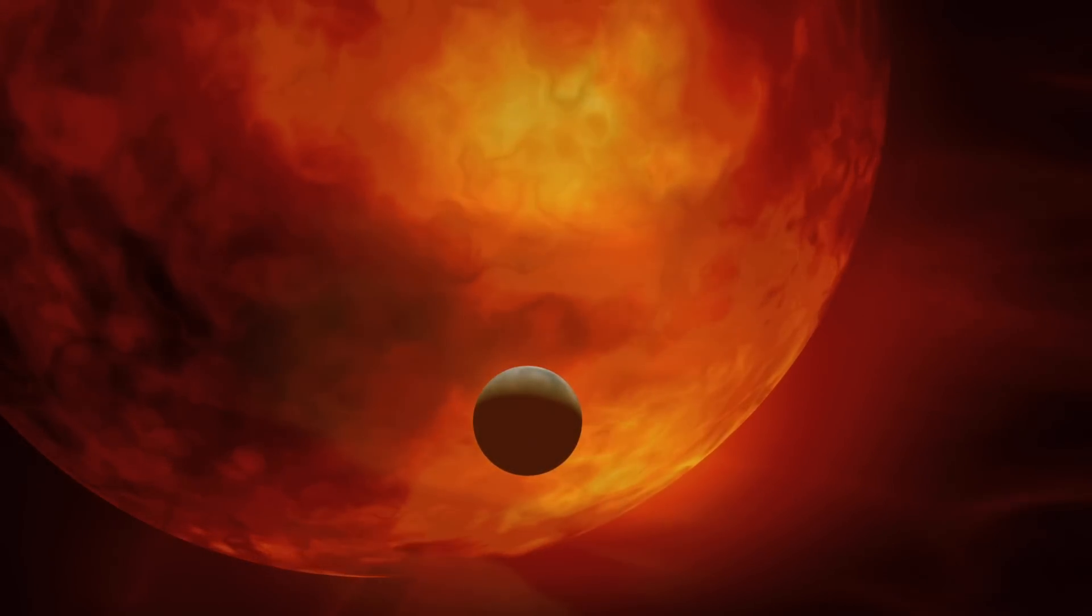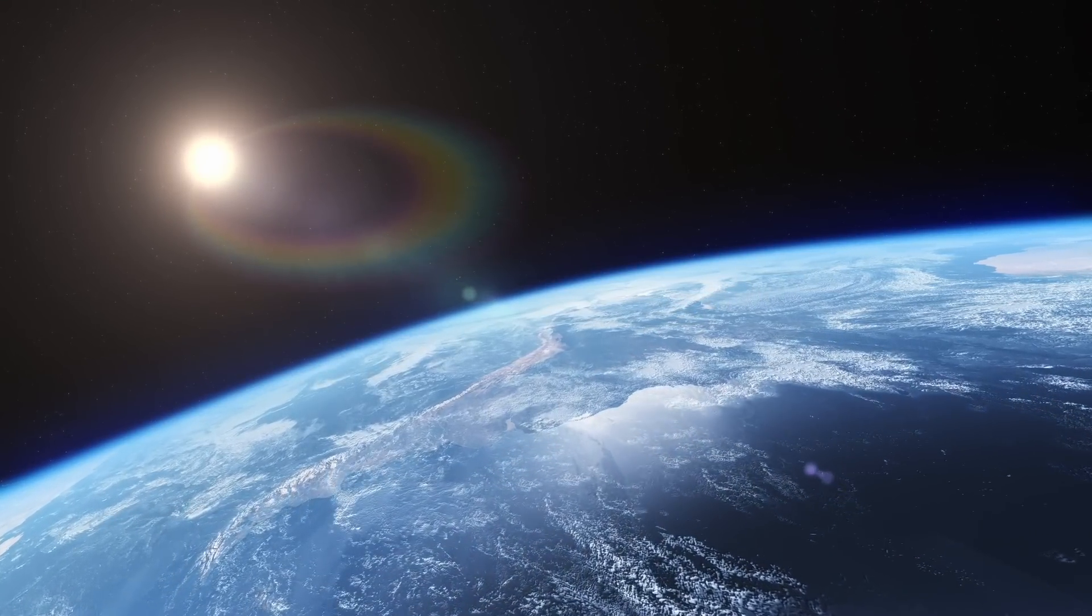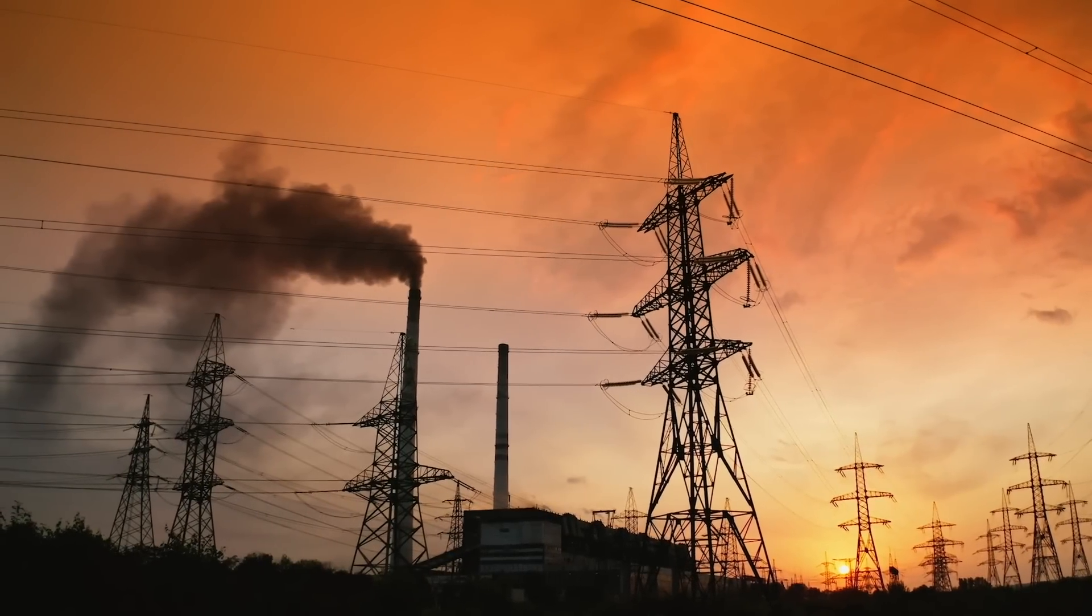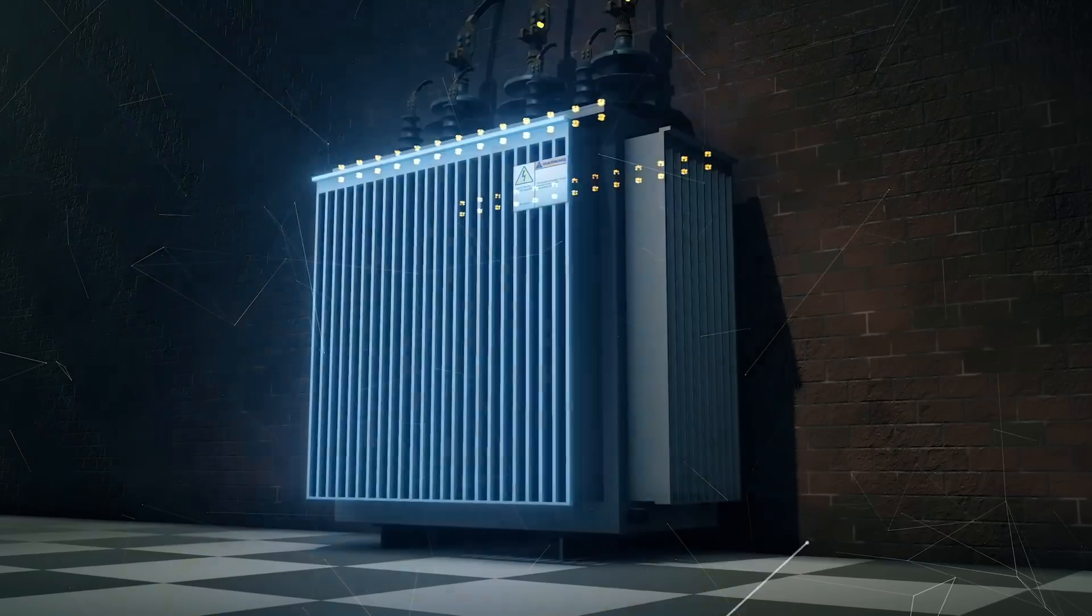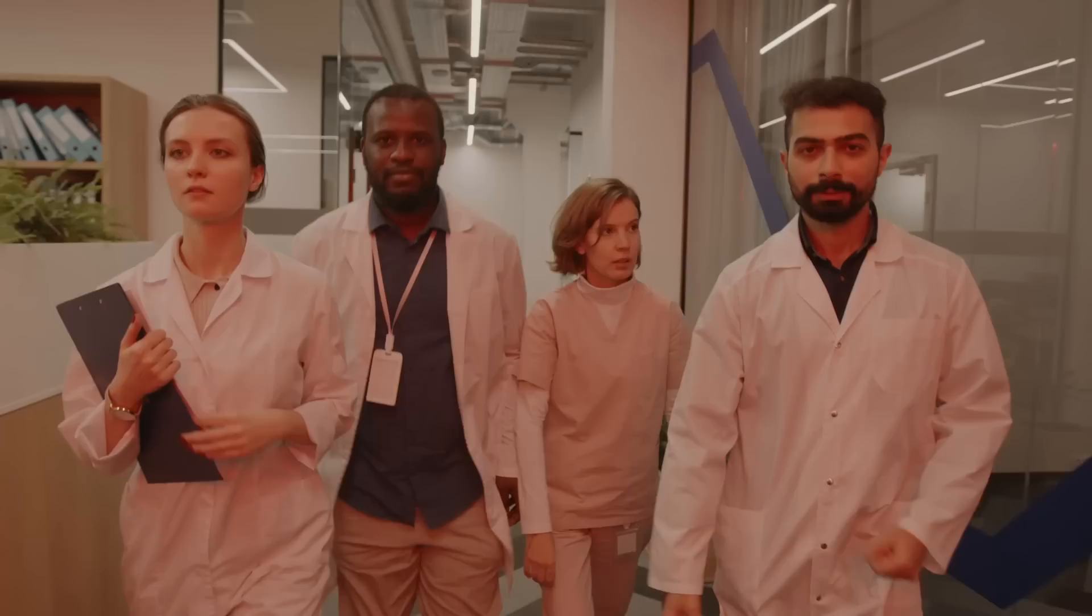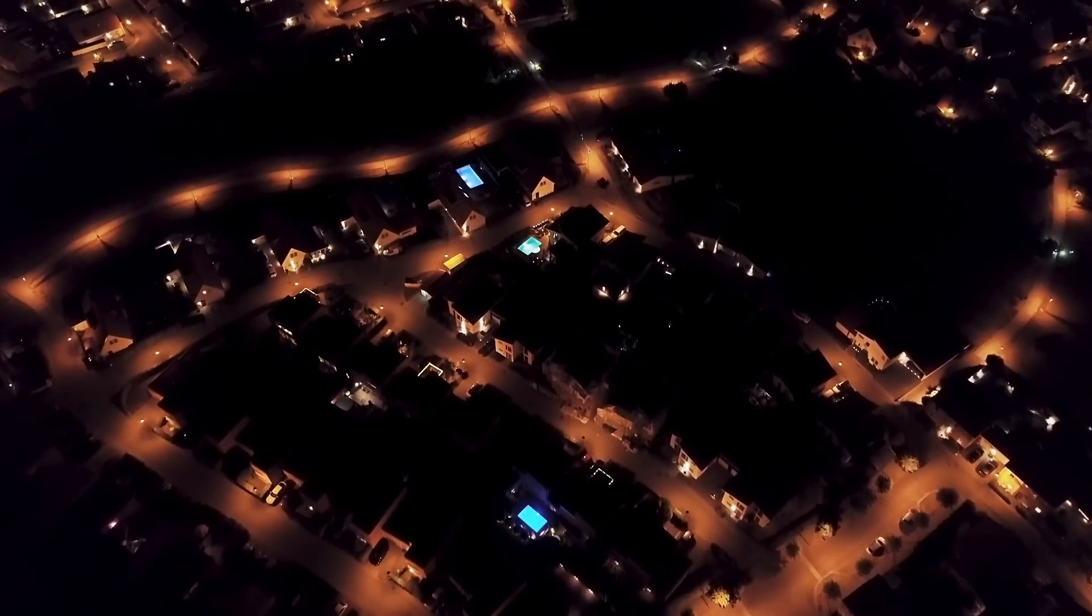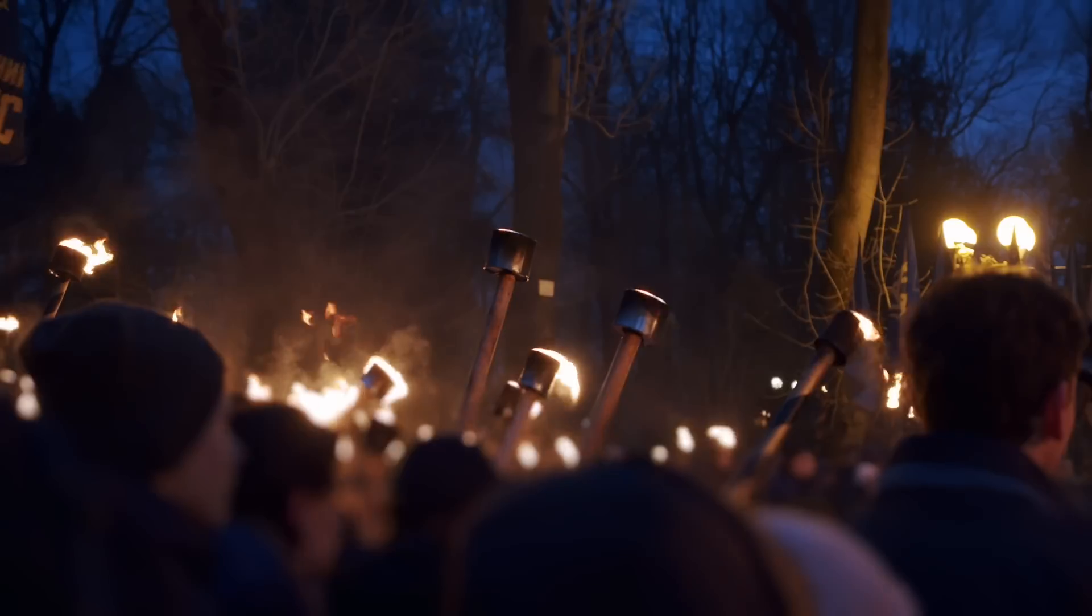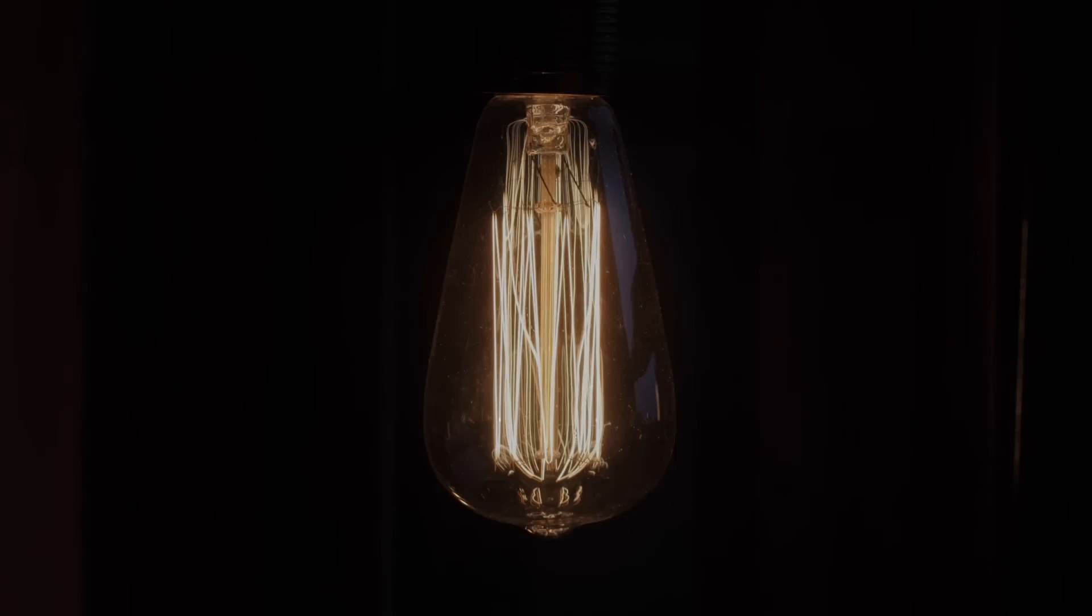Now just imagine if a solar storm of the magnitude of the Carrington event were to hit Earth today. The consequences would be nothing short of catastrophic. The most immediate effect would be on our power grids. The intense geomagnetic currents from such a solar storm could overload transformers and critical infrastructure, causing massive and prolonged blackouts. Entire cities could be plunged into darkness for days, weeks or even months. Imagine the chaos of losing power on such a scale. Hospitals, homes and businesses all suddenly going dark.